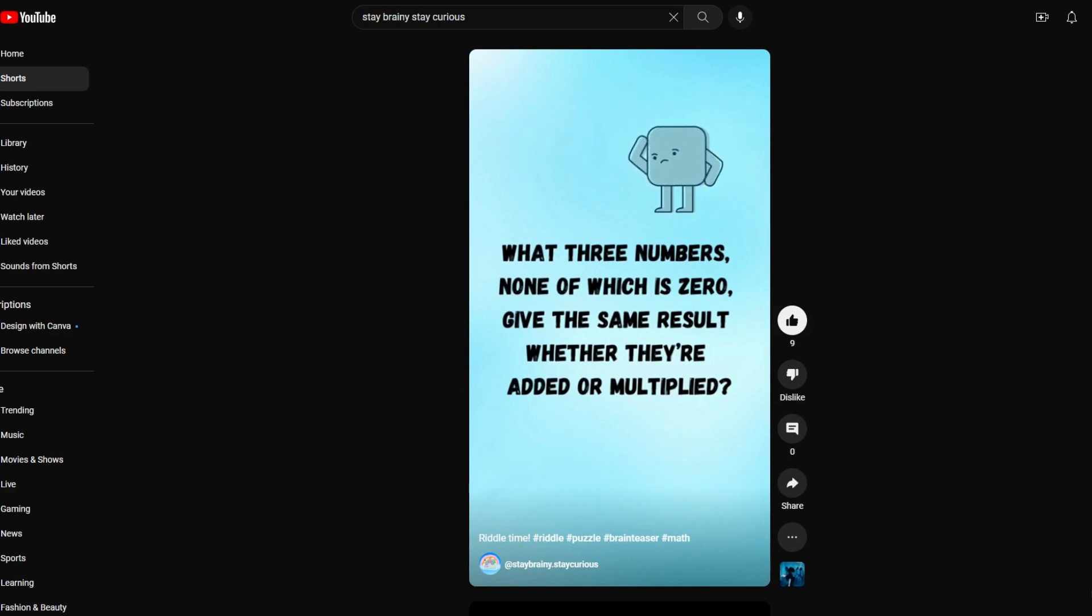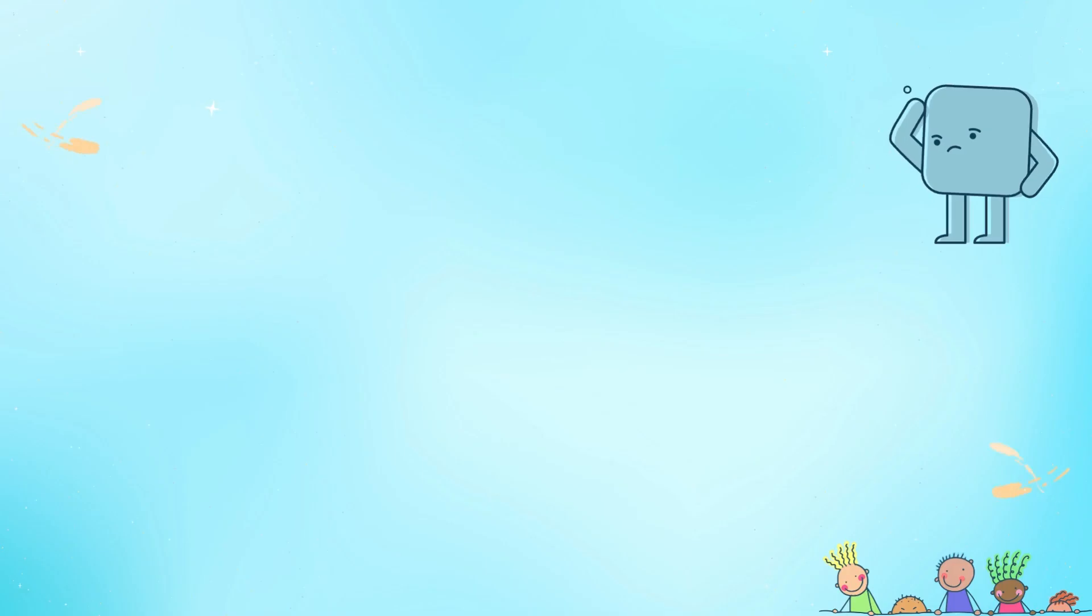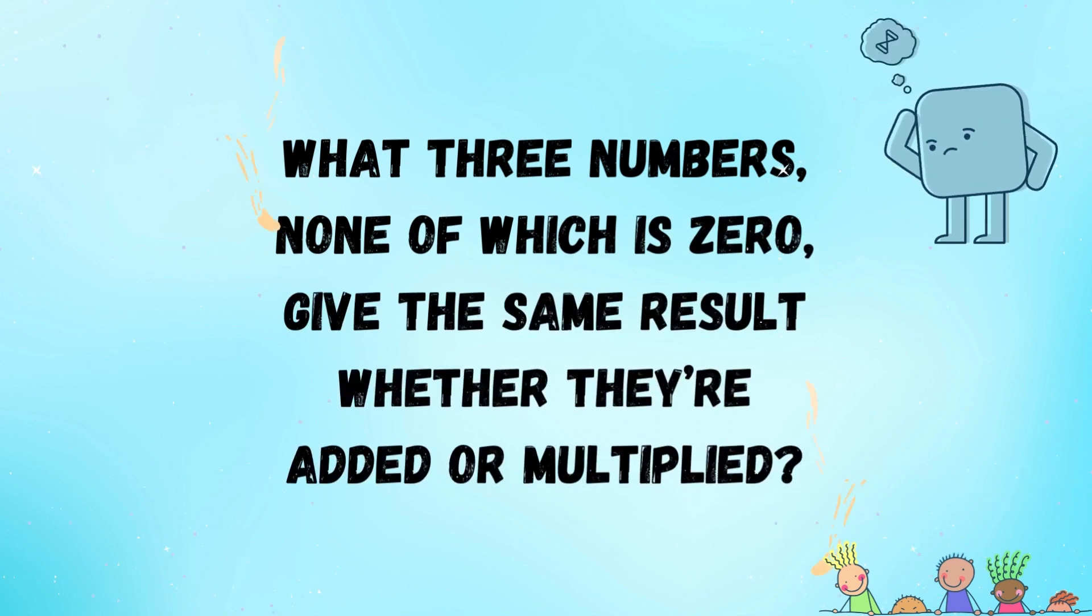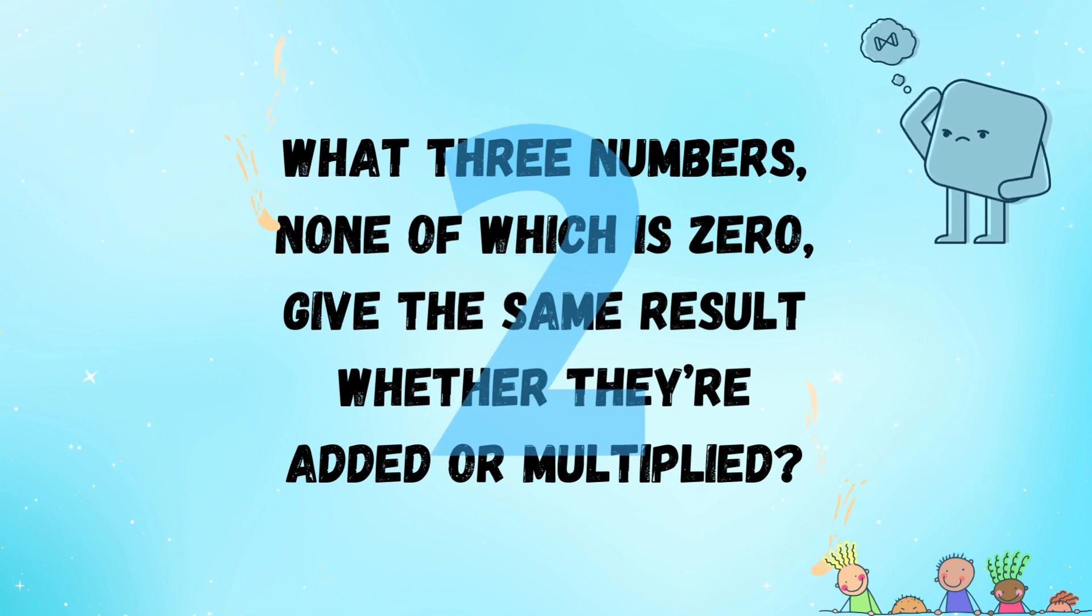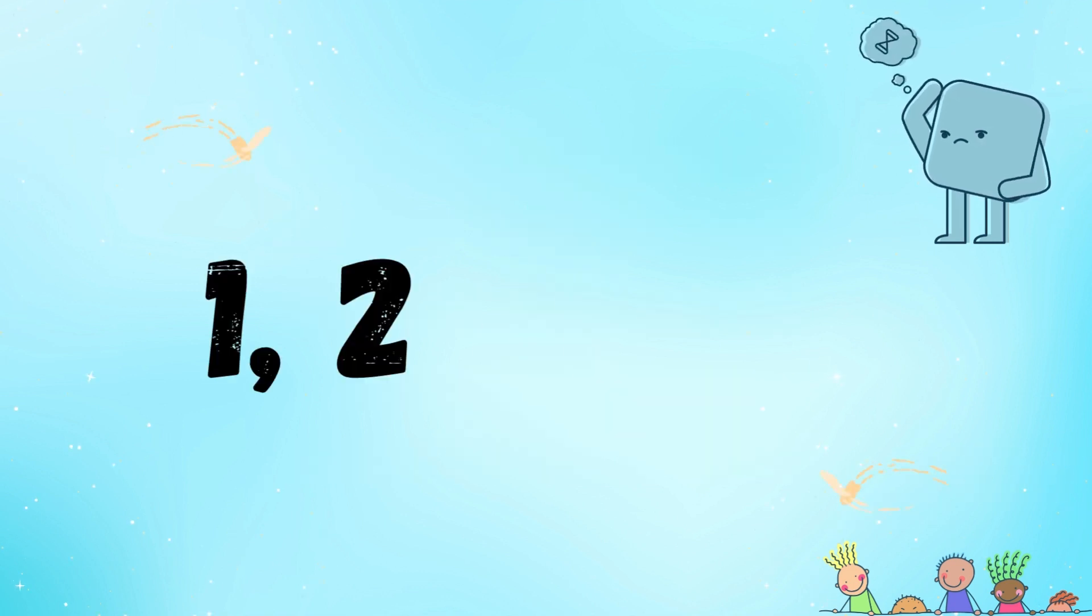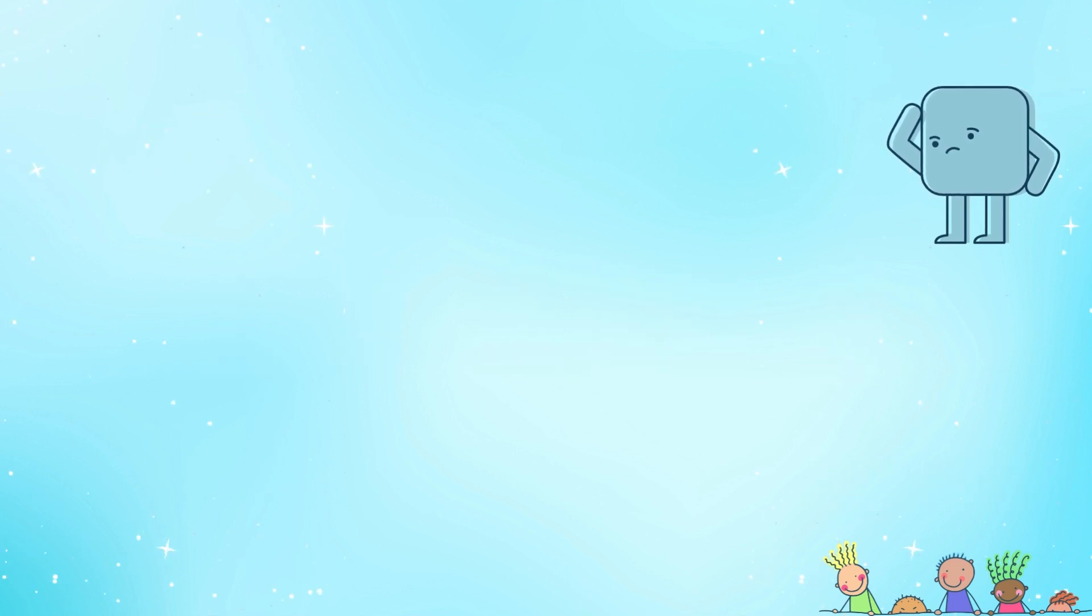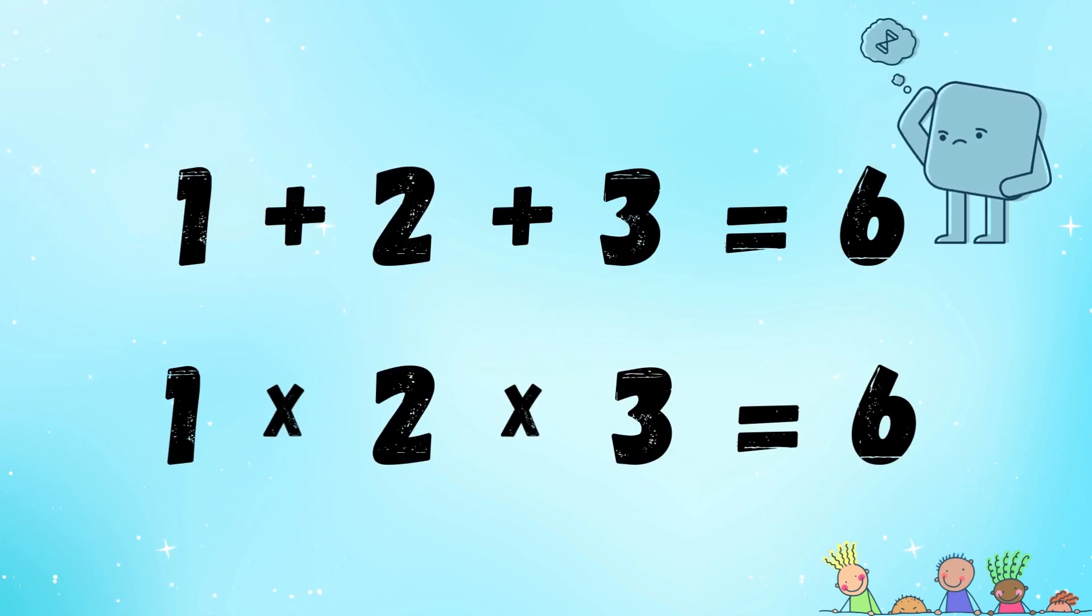Let's move on to something slightly easier, shall we? The next riddle goes, what 3 numbers, none of which is 0, give the same result whether they're added or multiplied? The numbers are 1, 2, and 3. 1 plus 2 plus 3 equals 6. And 1 times 2 times 3 is also 6. I bet you got this one, right?